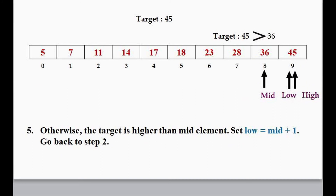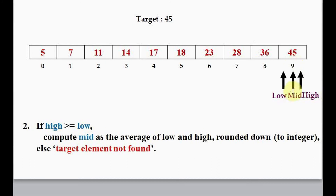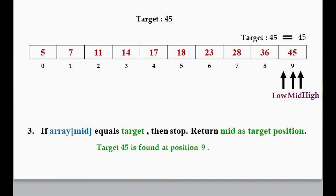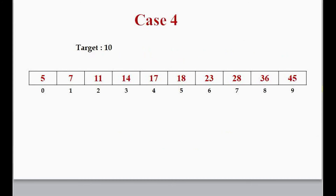We go back to step 2 again. Now low and high both point to the same position. The condition high greater than or equal to low is still satisfied, so we compute mid: 9 plus 9 gives 18 divided by 2 — mid also points to position 9. Now all three, low, mid, and high, point to index 9. We check if array[mid] equals target — yes, we got it. Target 45 is found at position 9.